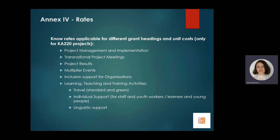Annex 4 is only applicable to KA220 cooperation partnership projects and lists applicable rates for project management, implementation, transnational project meetings, project results multiplier events, inclusion support for organizations, learning teaching and training activities, travel — both standard and green — individual support for staff, youth workers, learners, young people, and linguistic support. These are the same rates embedded in the application form that you used when completing your application.